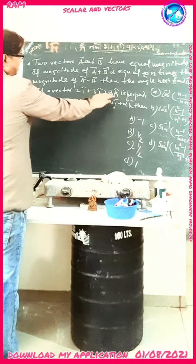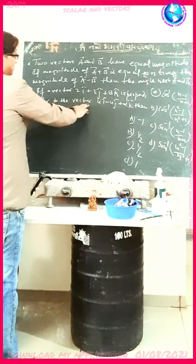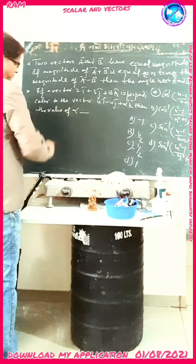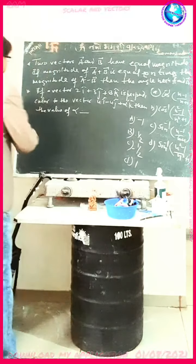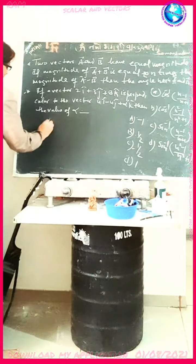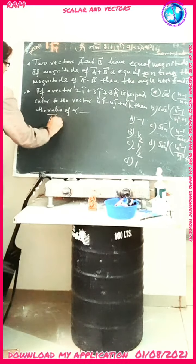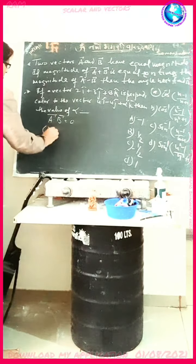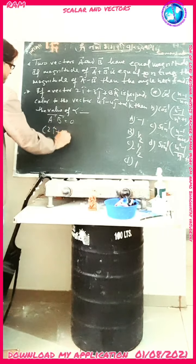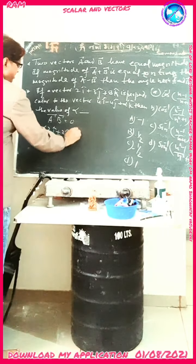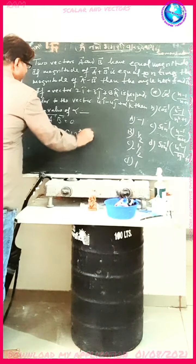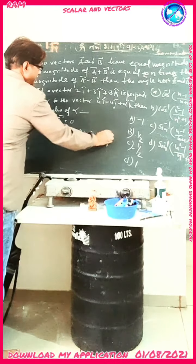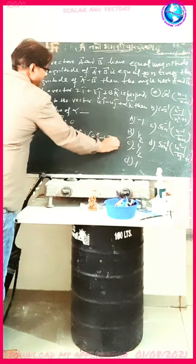Next here, vector 5i plus 2j plus 8k is equal to 2. The vector is 4i minus 4j plus alpha k. Then find the value of alpha. If all the vectors are perpendicular, then A dot B is equal to 0. We need this value here. That is 2i plus 3j plus 8k dot 4i minus 4j plus alpha k is equal to 0.